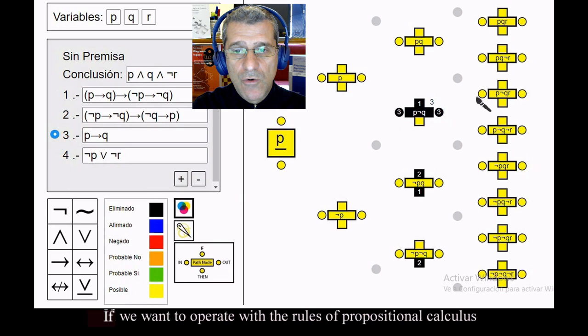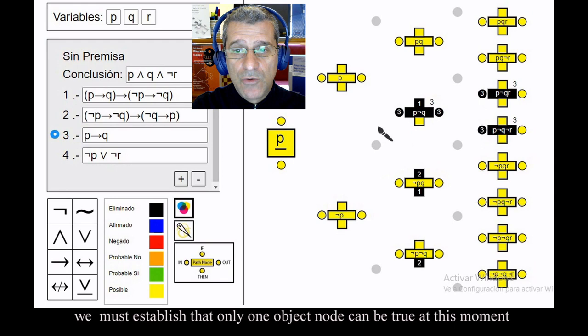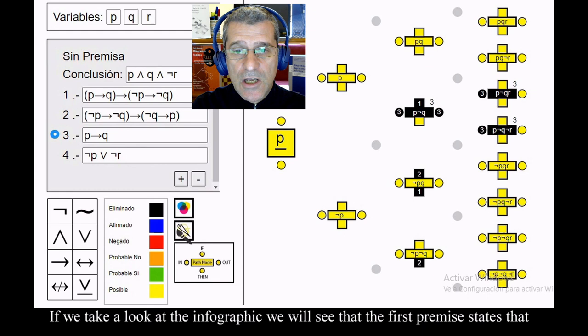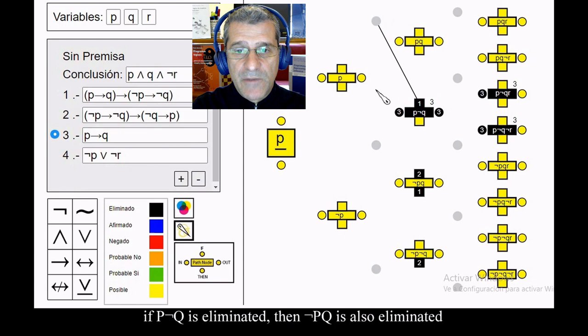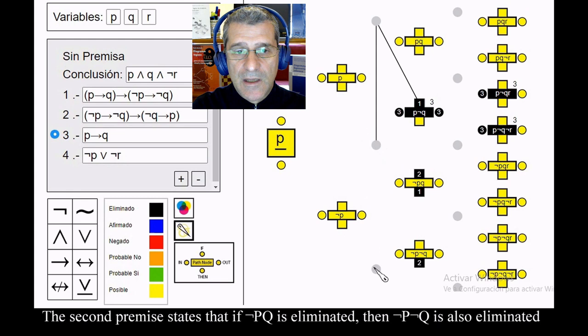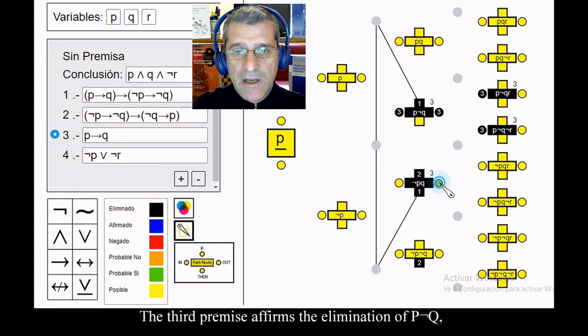If we take a look at the infographic, we will see that the first premise states that if p node q is eliminated, then node p node q is also eliminated. The third premise affirms the elimination of p node q, which entails the elimination of p node q, which entails the elimination of node p node q based on the first premise.